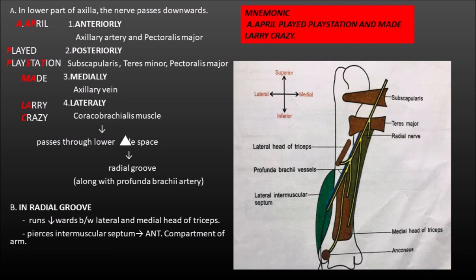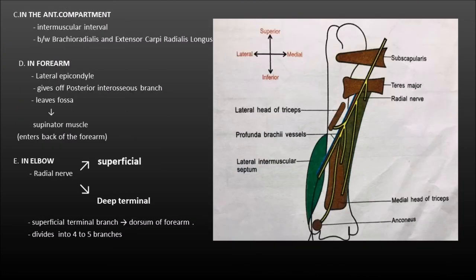In the picture, you can see clearly that on the posterior there is subscapularis and teres major, and you can see that the radial nerve enters the radial groove along with the profunda brachial artery, and at the lower end of the radial groove it pierces the lateral muscular septum and enters the anterior compartment of the arm. Once it enters the anterior compartment, it passes in an intermuscular interval between the brachioradialis and extensor carpi radialis longus and supplies these muscles. In the forearm, once it reaches the level of lateral epicondyle, it gives off the posterior interosseous branch which leaves the fossa by piercing the supinator muscle and enters the back of the forearm. At the elbow joint, the radial nerve divides into superficial and deep terminal branches.